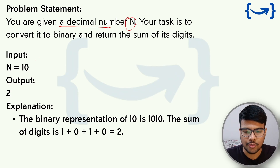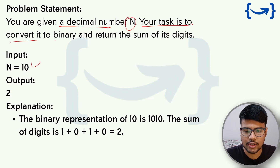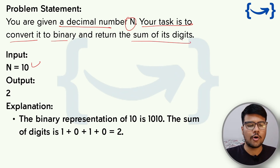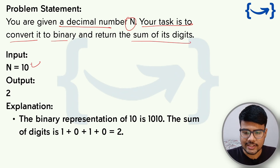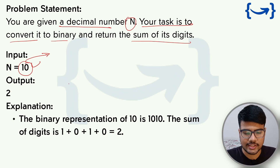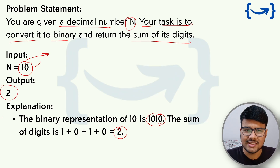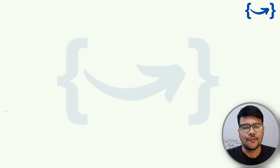Now, problem statement: you are given a decimal number N, and your task is to convert it to binary and return the sum of its digits. For example, the decimal number 10 has binary equivalent 1010, so the sum of digits is 2 — we need to return 2 as the output. This question is pretty simple.